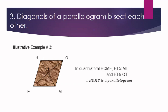Let us move to the third condition: diagonals of a parallelogram bisect each other. If you have the word bisect, it means that it is divided into two equal parts, whether it is a segment or an angle.